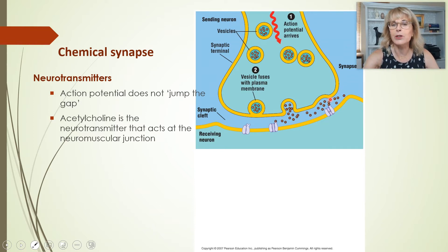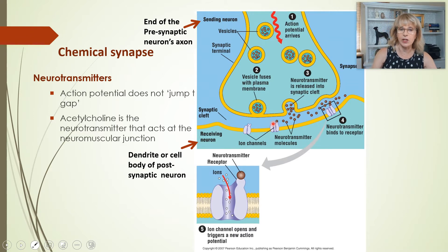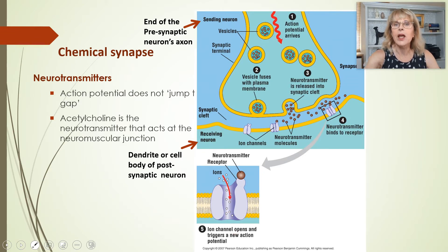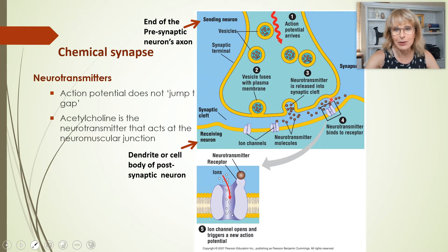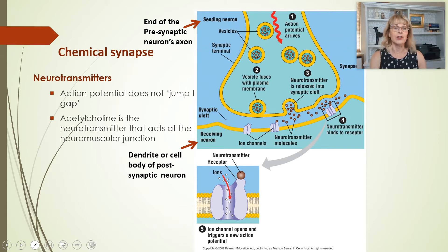The more neurotransmitters there are, the more ligand-gated channels will end up getting opened. A neurotransmitter binds to a ligand-gated channel and causes it to open. The more frequent the action potentials, the more exocytosis, the more neurotransmitters build up, and the more channels get opened. The more channels that open, the more of whatever ion it is is allowed to enter the cell.